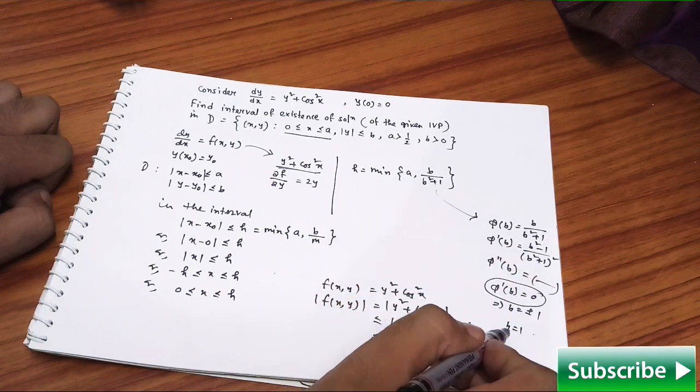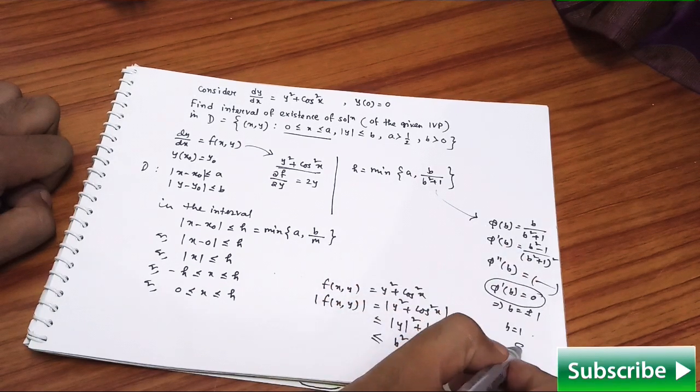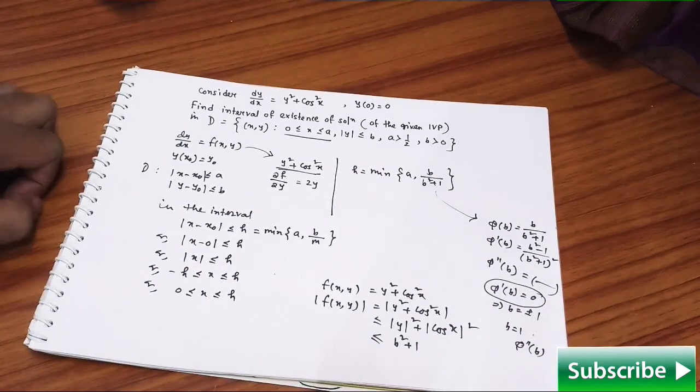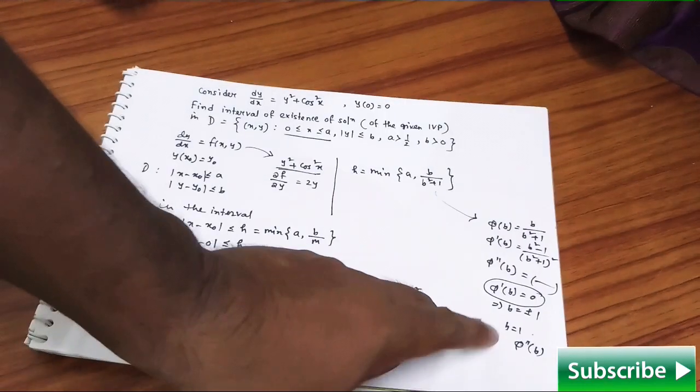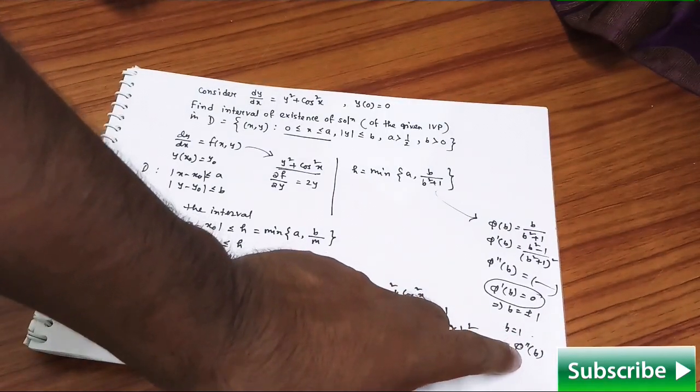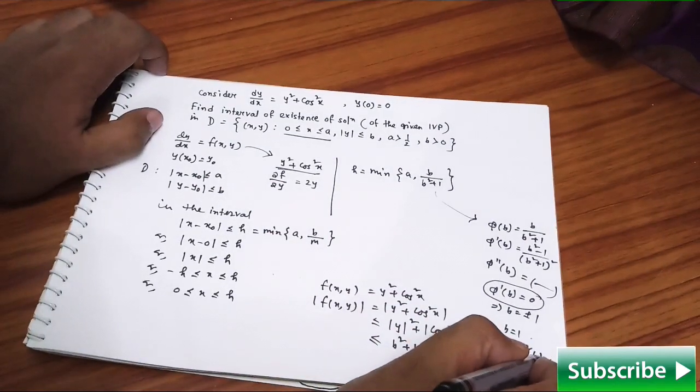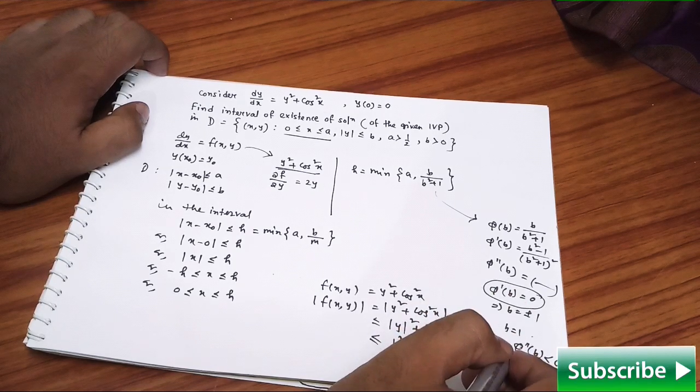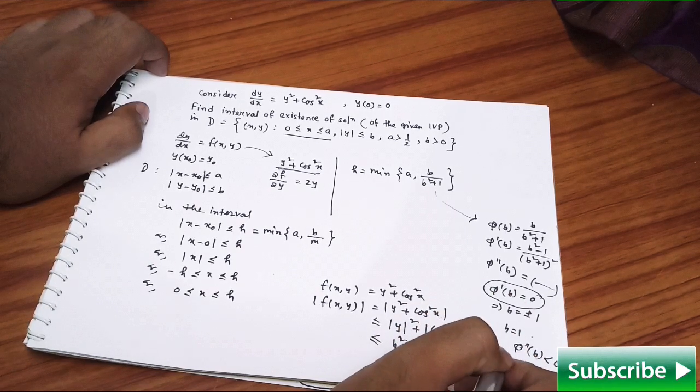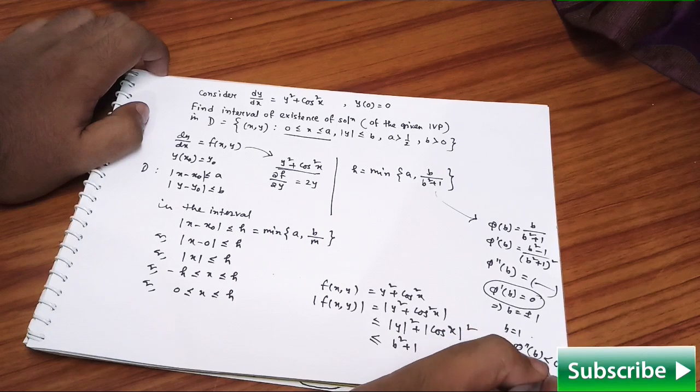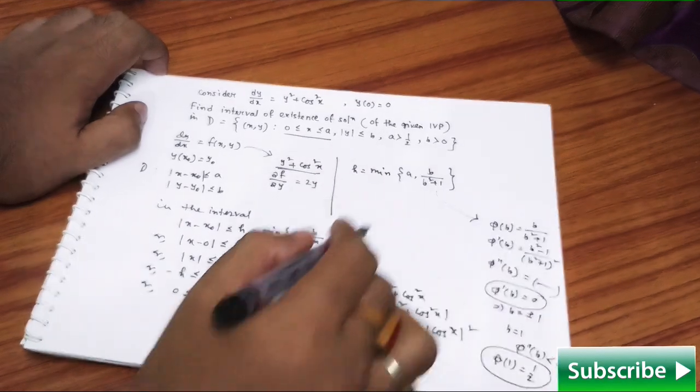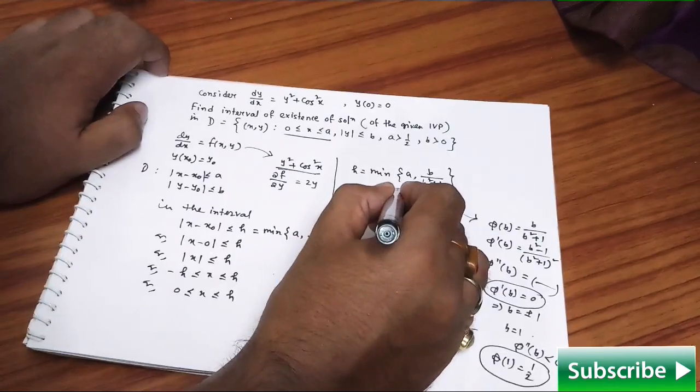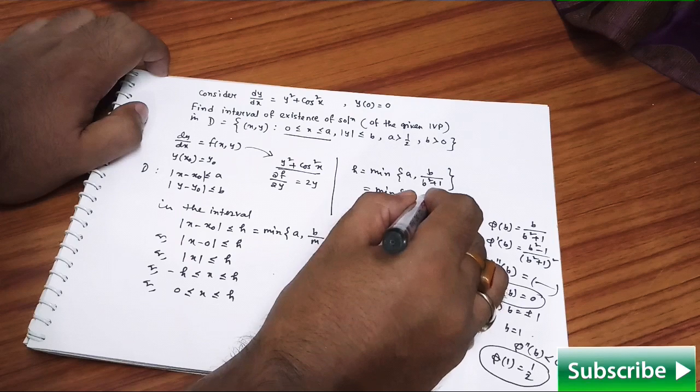To find the maximum-minimum value, just need to set φ'(b) equal to zero. From here you will get b = ±1. For b = +1, you will get the maximum value of φ(b). For that purpose, at b = 1, just check the sign of φ''(b) - it's just 12th-level knowledge you're using here. At b = 1, you simply check φ''(b) and it will turn out to be less than 0. So you can say at b = 1, φ attains its maximum value, and that maximum value, φ(1), is going to be 1/2.